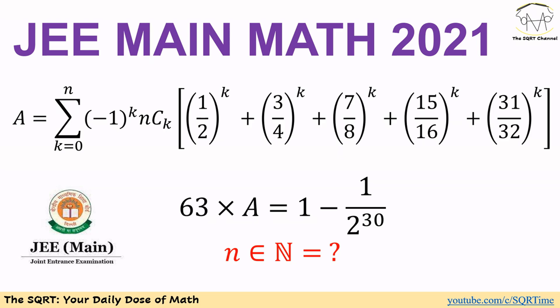Let's start with the first term: we have minus one to the power of k times n choose k, times an expression with five terms adding together. For the first term we have 1 over 2 to the power of k, for the second term 3 over 4 to the power of k, for the third term 7 over 8 to the power of k, then 15 over 16 to the power of k, and finally 31 over 32 to the power of k.